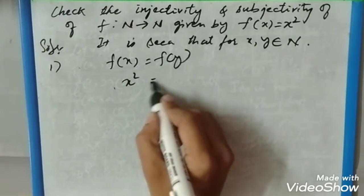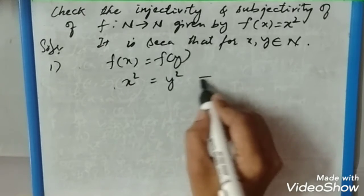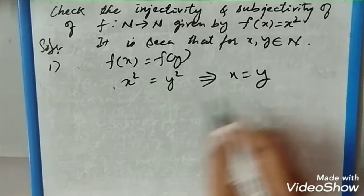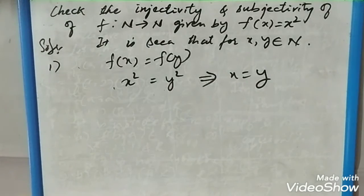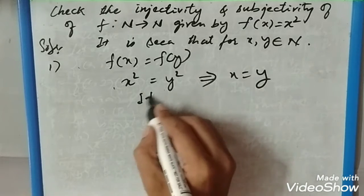If x = y, then this is called one-one. It is a one-one function, or it is also called injective. For the second part, we need to check the surjectivity.